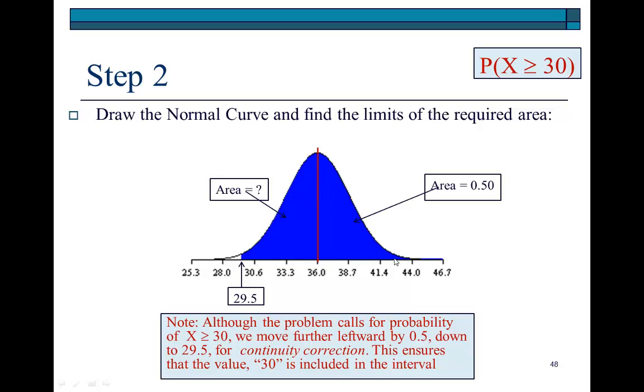And then, remember, the probability that we want is 30 or more. Now, 30 or more means that for continuity correction, we're going to have to start from 29.5 and work our way upwards, so that the number 30 is definitely included within this probability space.